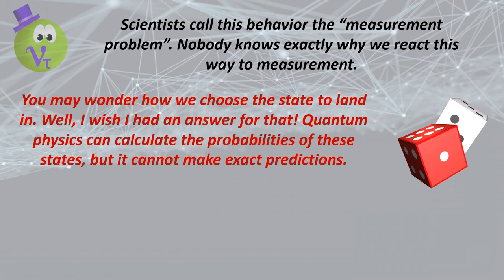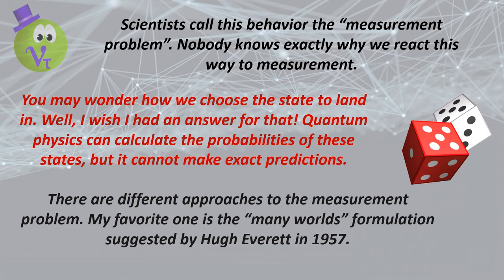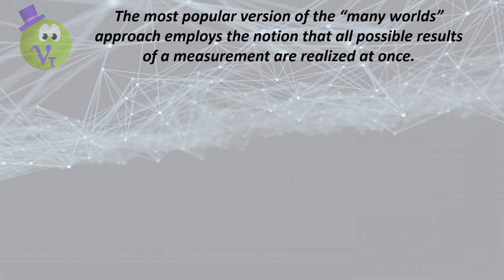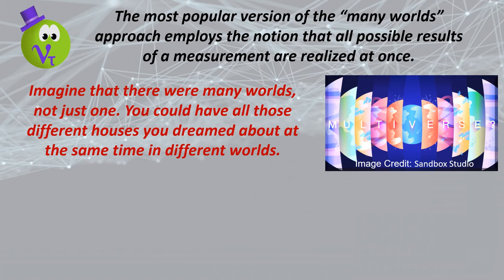There are different approaches to the measurement problem. My favorite one is the many worlds formulation, suggested by Hugh Everett in 1957. The most popular version employs the notion that all possible results of a measurement are realized at once. Imagine that there were many worlds, not just one — you could have all those different houses you've dreamed about at the same time in different worlds.